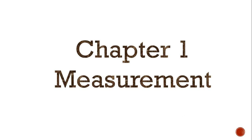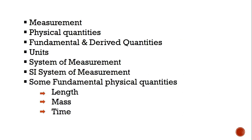So before we start, let me just give you a short summary of the chapter. In this chapter we will talk about different topics. The very first topic is measurement itself. These are physical quantities — both fundamental as well as derived quantities. Then we will move forward into units. We will also read about the most important system of measurement which is the SI system. Then towards the ending of our chapter we will be reading about three different fundamental physical quantities: length, mass and time. So let's start with what measurement is first.